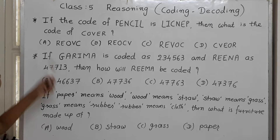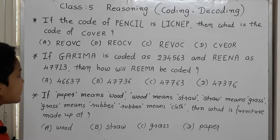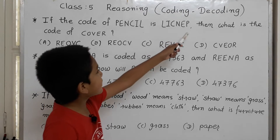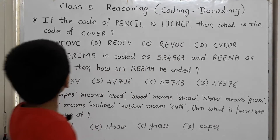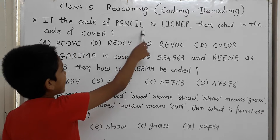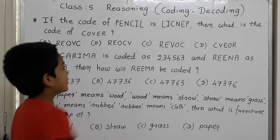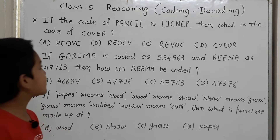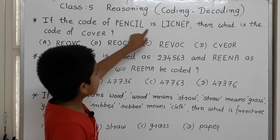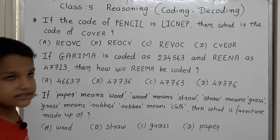There is a sum to solve. If the code of P-E-N-C-I-L is L-I-C-N-E-P, then what is the code of C-O-V-E-R? Here, L comes at the last and first — it is reversed. So L-I-C at the last becomes L-I-C first, meaning the word is completely reversed.